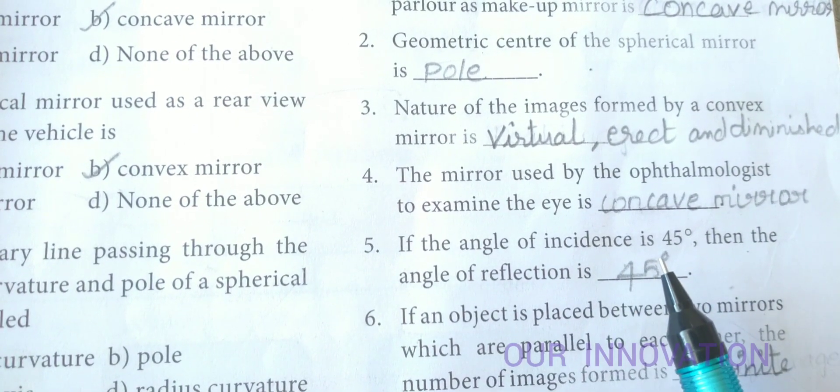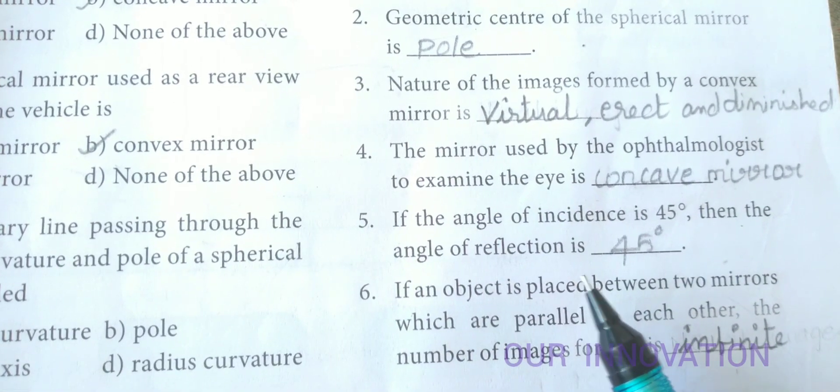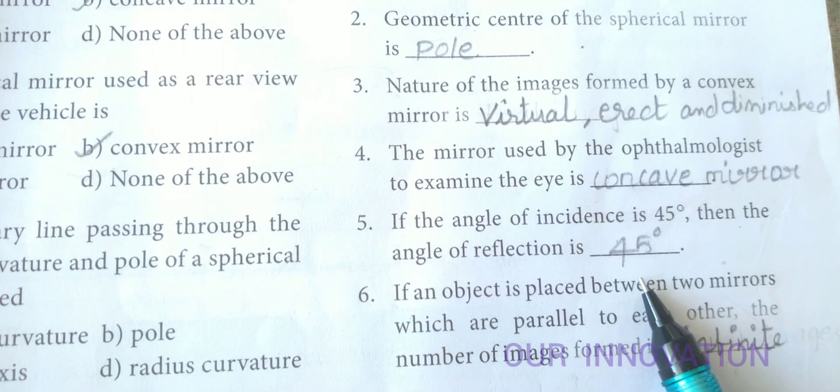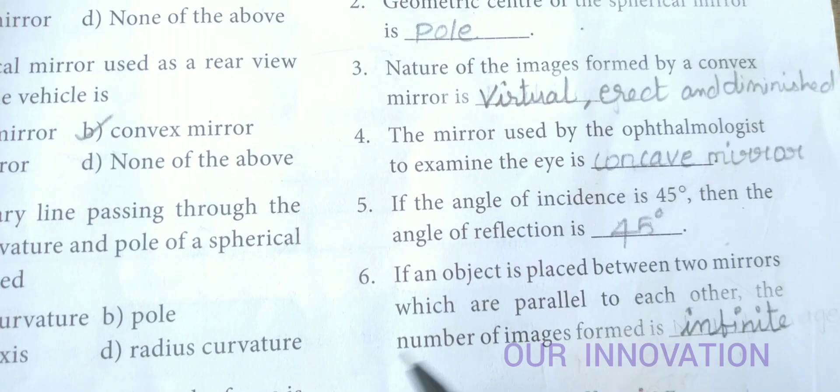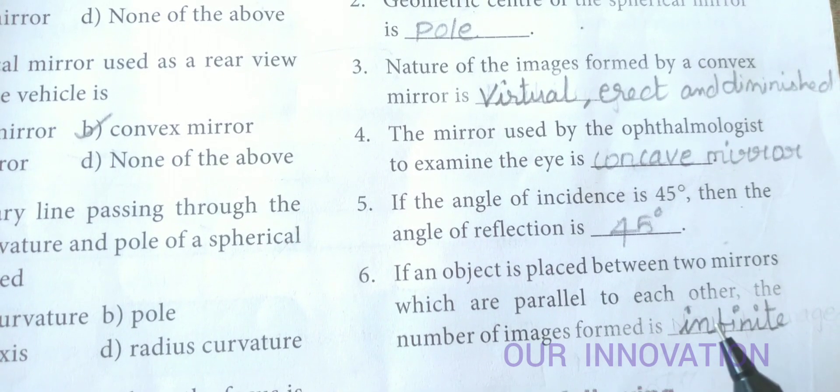If the angle of incidence is 45 degrees, then the angle of reflection is also 45 degrees. If an object is placed between two mirrors which are parallel to each other, the number of images formed is infinite.